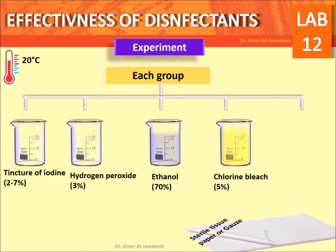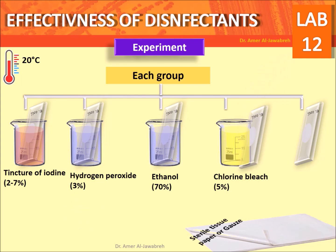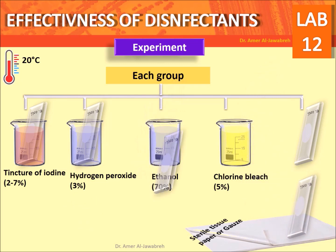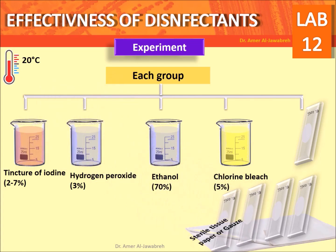For each group, provide four 25 ml beakers with 10 ml of the tested disinfectants or antiseptics. Immerse dry smears of E. coli into the disinfectant or antiseptic solutions for one minute, leaving one as a negative control. Then tip the slide on the side of the beaker and blot dry on tissue paper until dry.